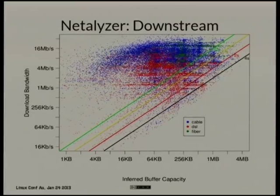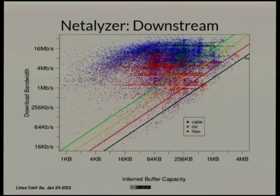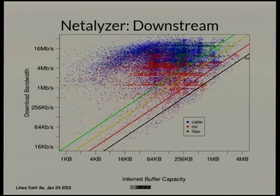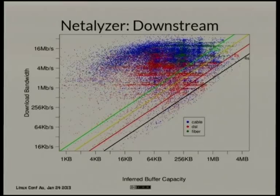There's a group at Berkeley at the ISC internet test lab with a tool called Netalyzer. It gives you a report and collects data from everybody who runs it — every dot is someone who ran the tool. The graph shows buffer capacity on one axis and measured bandwidth on the other. The green line is half a second of buffering, yellow is one second, red is two seconds, black is four seconds. Many people have many seconds of buffering on their average network connection.